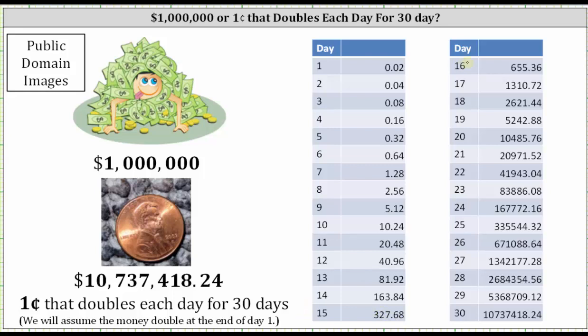But then looking at day 16 through day 30, notice after 26 days, the amount is still less than one million dollars. It's $671,088.64. But then notice on day 27, the balance is over one million dollars. It's $1,342,177.28.